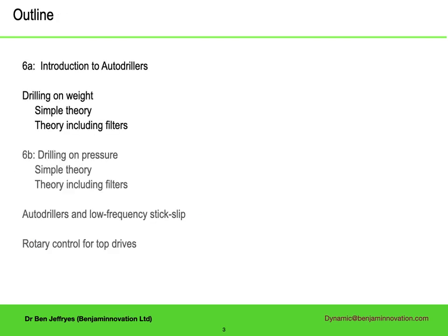I'm going to be talking about autodrillers, which is a subject that has surprisingly little published on it. Normally the controlled variable for autodrillers is weight, and I will discuss their behaviour and how they depend on the filters used on the autodriller input measurements. When drilling with a motor, it is common to try and drill at constant pressure, and in the second part of this talk I will repeat the theoretical analysis for motor drilling with pressure control, before talking about how autodrillers can affect stick slip, and finishing with a discussion of top drive control algorithms for reducing stick slip.